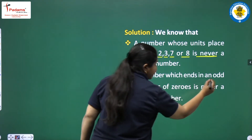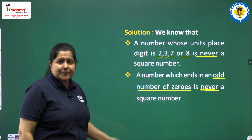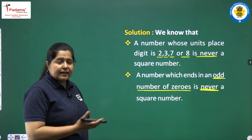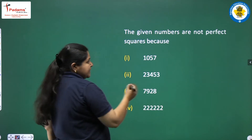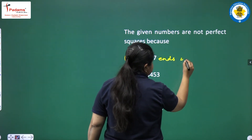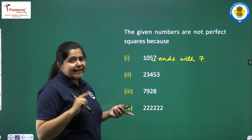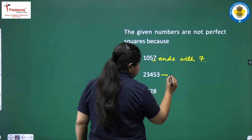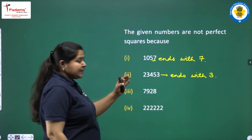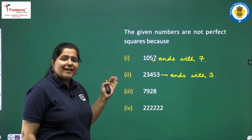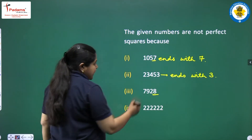And a number which ends in an odd number of zeros is never a square number. First, you need to write both these properties, then you can give your reason for each part. For example: 1057 ends with 7, so it is not a perfect square. 23453 ends with 3, so it is not a perfect square. 7928 ends with 8, so it is not a perfect square.